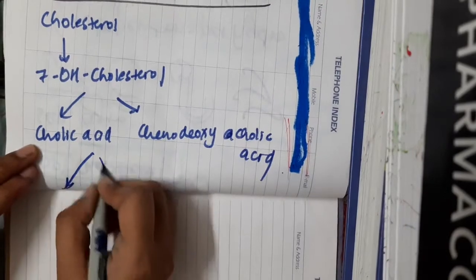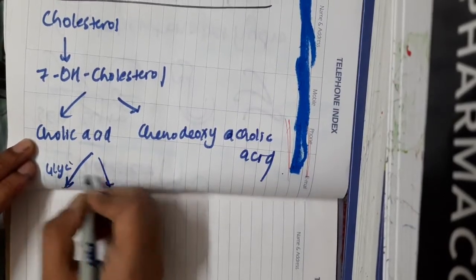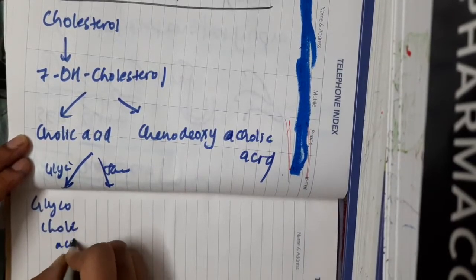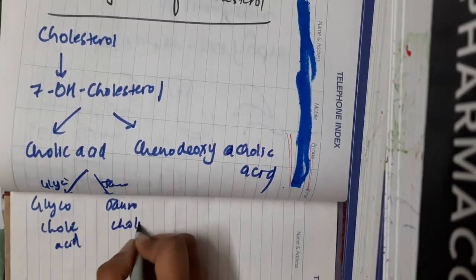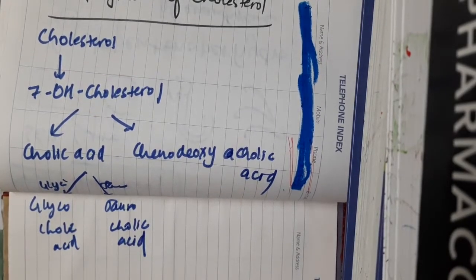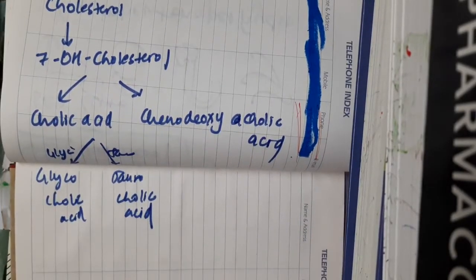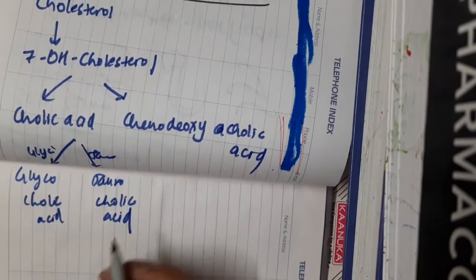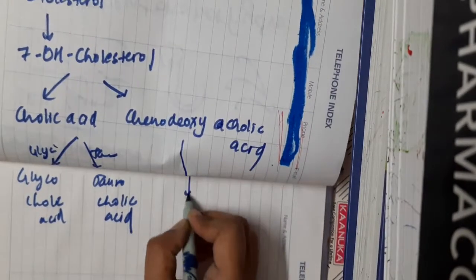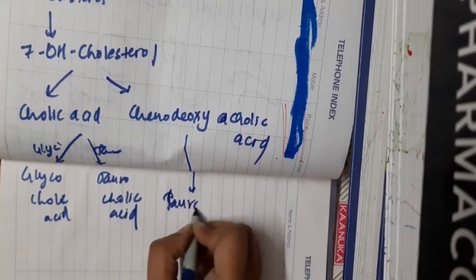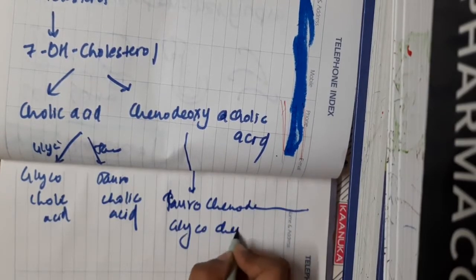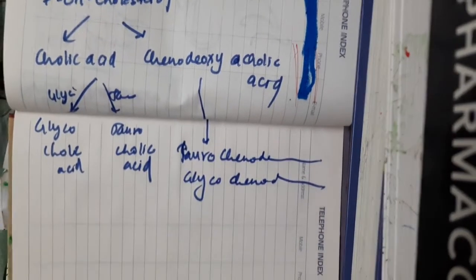Cholic acid combines with glycine and taurine to form glycocholic acid and taurocholic acid respectively. Chenodeoxycholic acid also combines with taurine to form taurochenodeoxycholic acid and with glycine to form glycochenodeoxycholic acid.